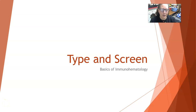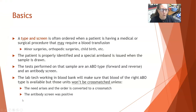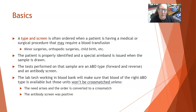Hi, this is Dr. A. I'm bringing you a basics of immunohematology video. This one is going to be on the type and screen. Type and screen is different than type and crossmatch — I'll have another video for that. The type and screen is often ordered when the patient is going to have a medical or surgical procedure that may require a blood transfusion, where there is a slight risk of blood loss — such as minor surgeries, orthopedic surgeries, or childbirth.